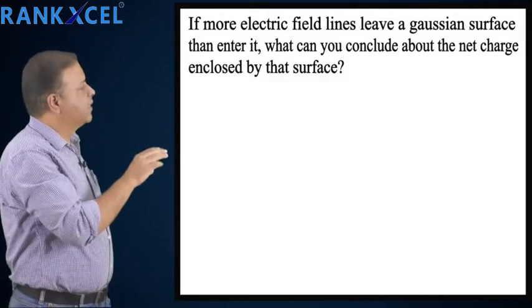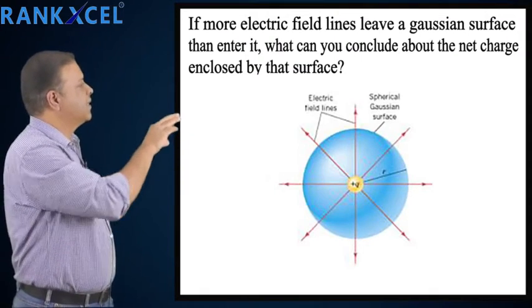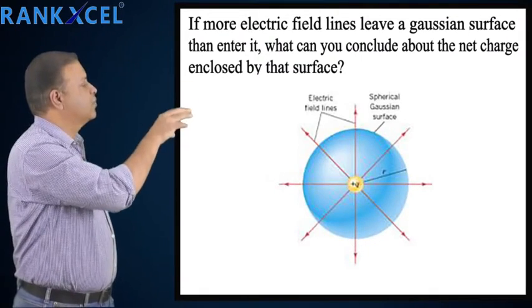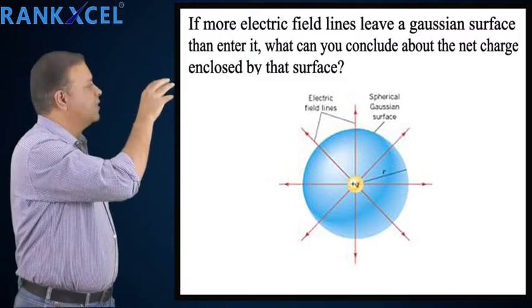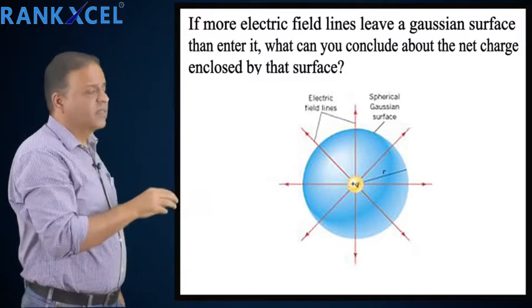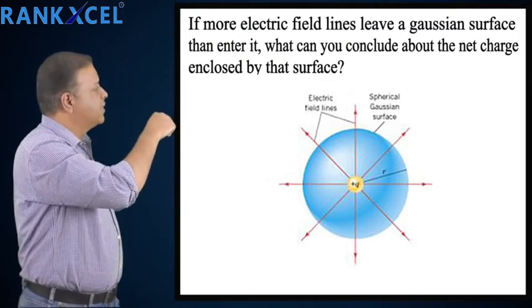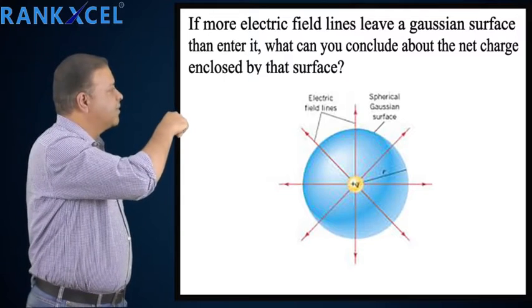To understand this, just look at the diagram shown over there. There is a charge in the center, and you can see that there is a spherical Gaussian surface and the electric field lines.